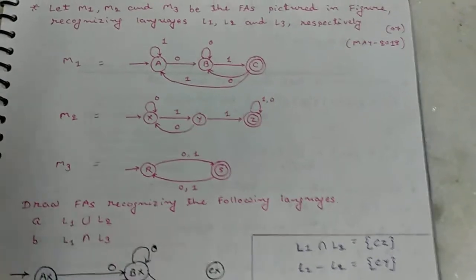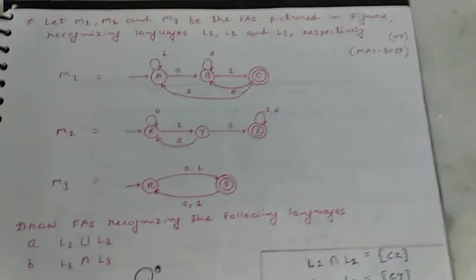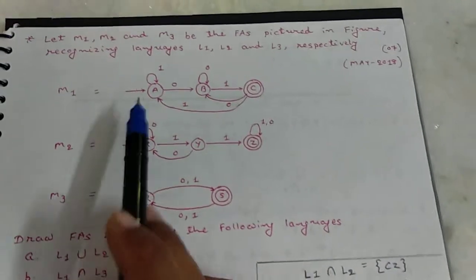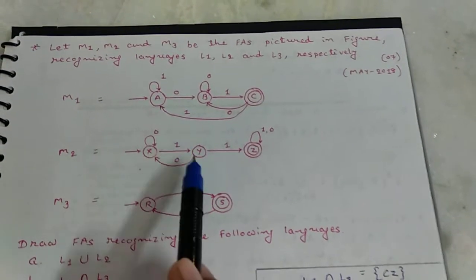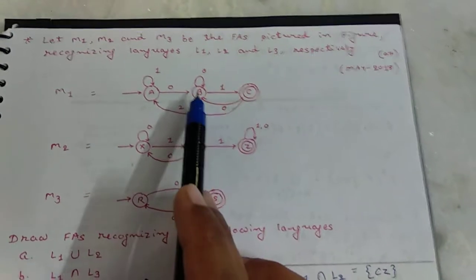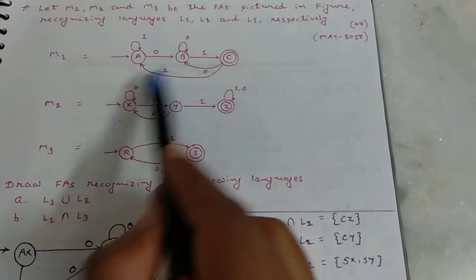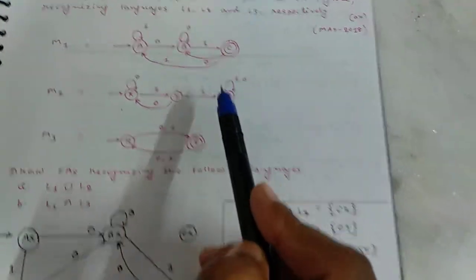For L1 union L2, you have to cross product for M1 cross M2. A with X, A with Y, A with Z, B with X, B with Y, B with Z, C with X, C with Y, C with Z.